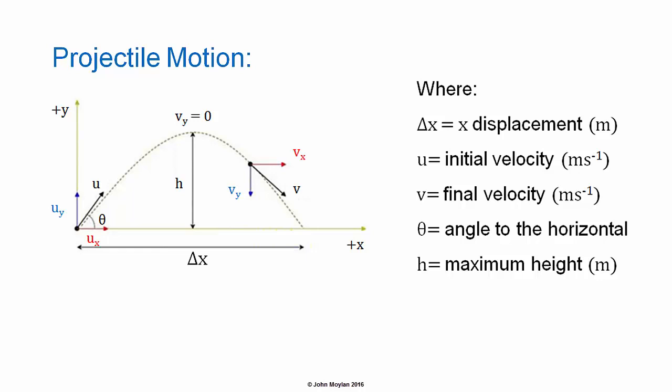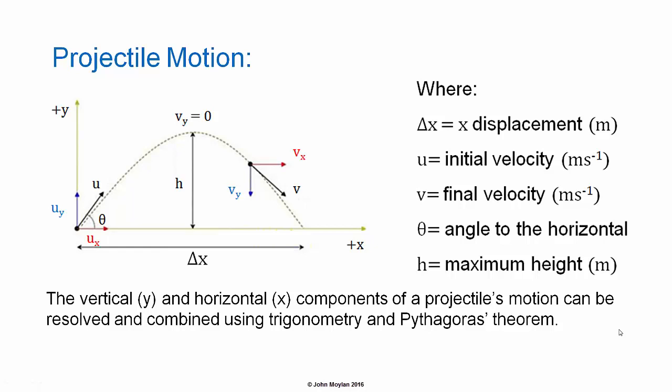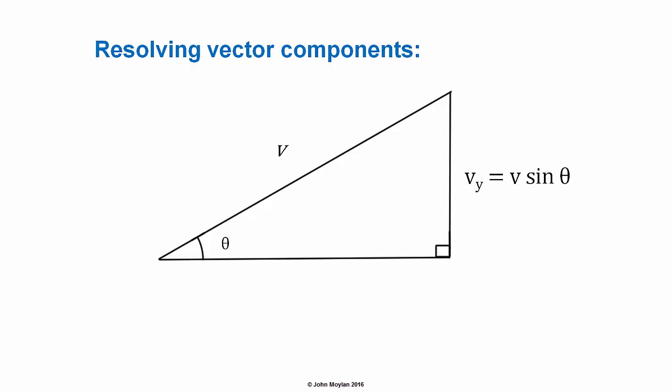H is the maximum height attained by the projectile. At H, at maximum height, the vertical velocity of the projectile is equal to zero. The vertical Y and horizontal X components of a projectile's motion can be resolved and combined using trigonometry and Pythagoras' theorem. Resolving vector components.